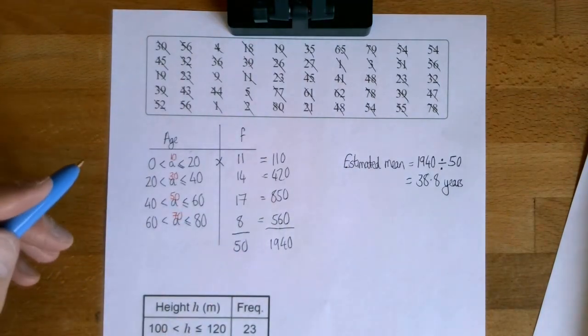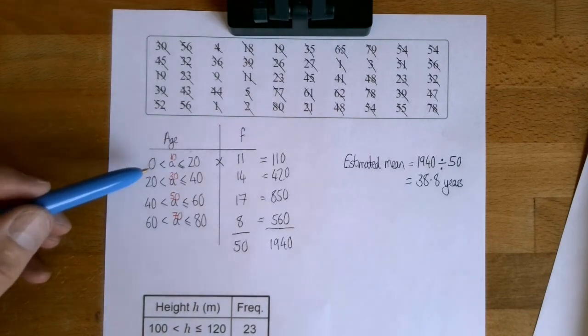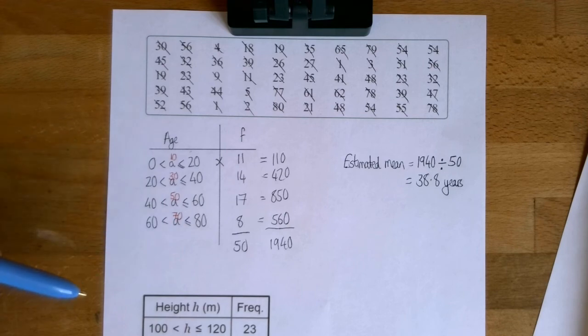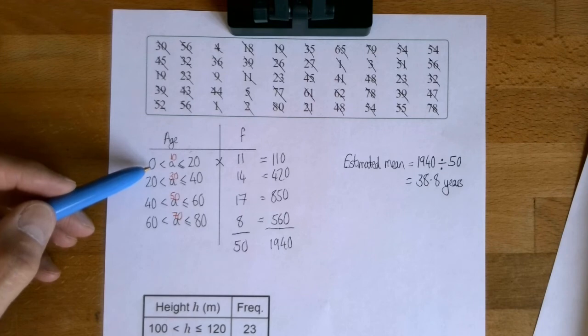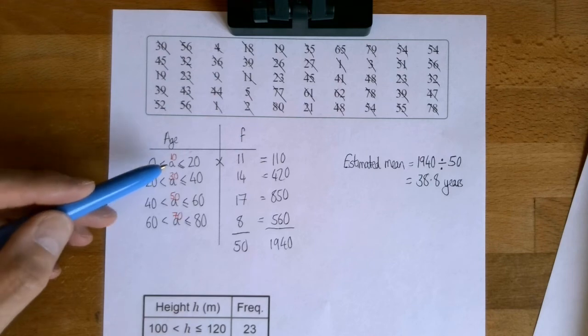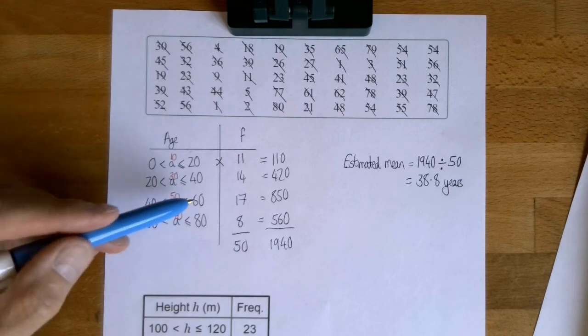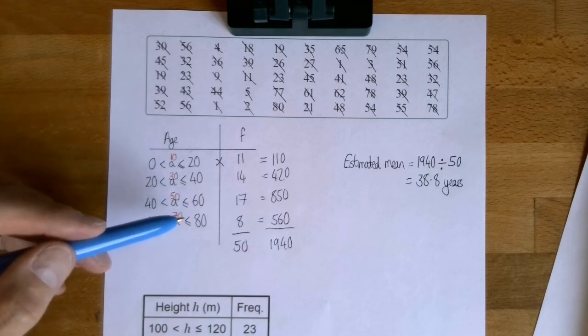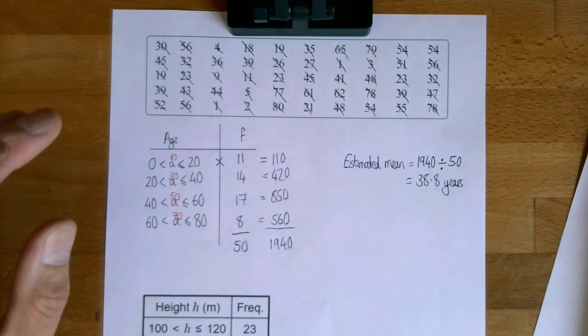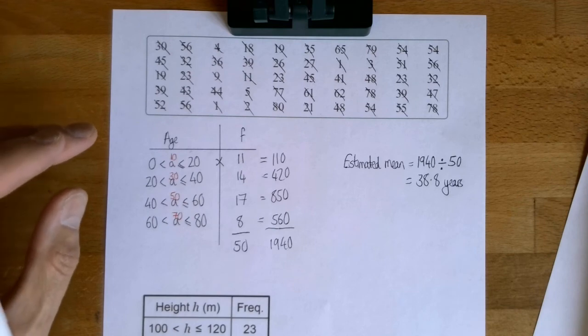How can we get a better estimate? Well, you might be able to see that I did fairly wide groups, 0 to 20. That's a big width of age. There's a big difference between a 0 year old, a baby, and a 20 year old. So if I'd been a bit clever and used groups, say from 0 to 10 and 10 to 20 and 20 to 30 and 30 to 40, then I would have got a better estimate. The more groups you use, the better the estimate that you get.